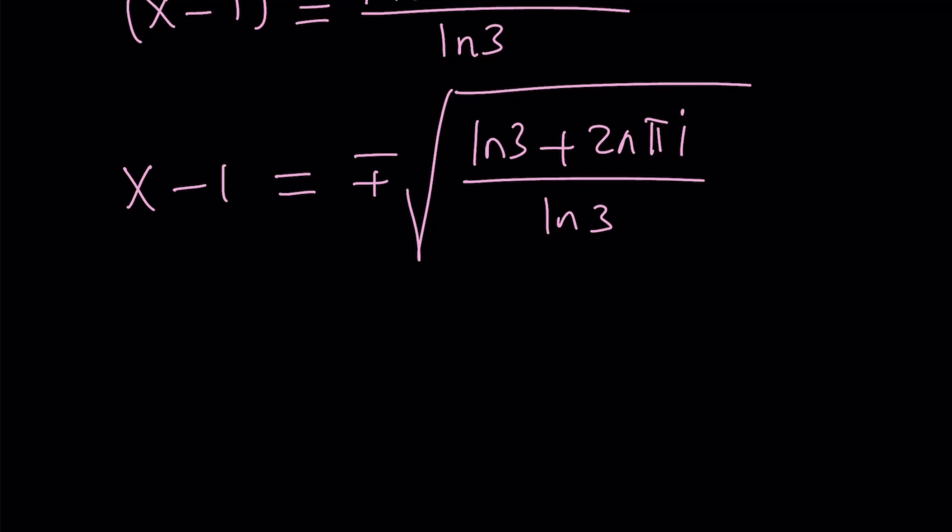The next step would be to isolate x. So let's add one to both sides. If you add one, you're going to get x. And if you add one, you're going to get one plus minus the square root of ln3 plus 2n pi i divided by ln3. Do you like the solution?